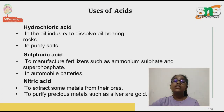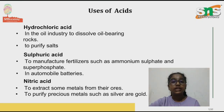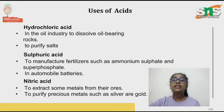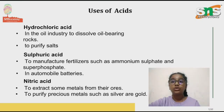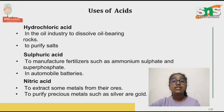Now let's see the uses of nitric acid. Nitric acid is used to manufacture fertilizers such as ammonium nitrate. It is used to extract some metals from their ores, and it is also used to purify precious metals such as gold and silver.